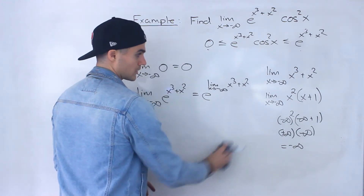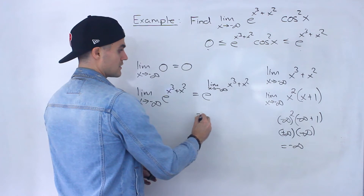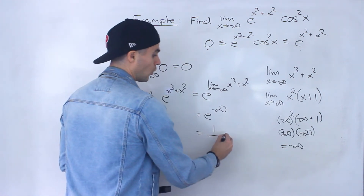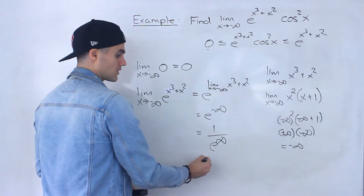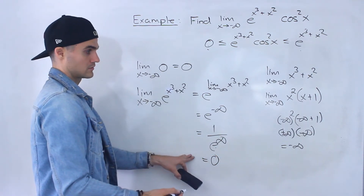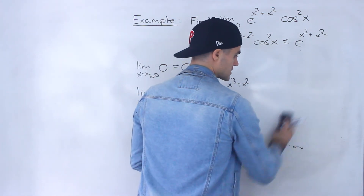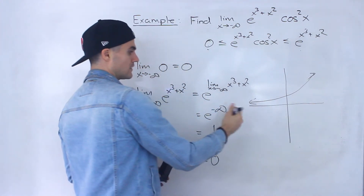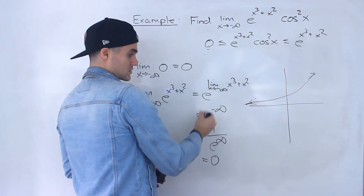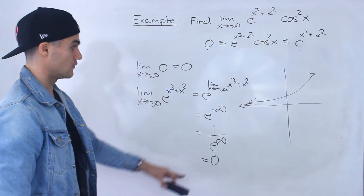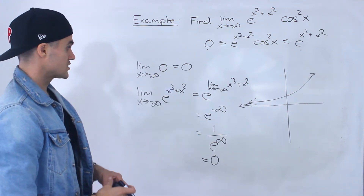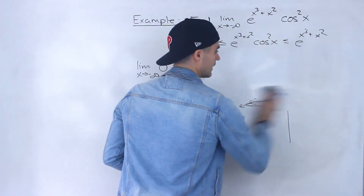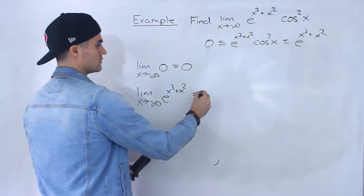So, showing it both algebraically and graphically, the exponent goes to negative infinity, meaning we have e to the negative infinity. That's the same as 1 over e to the infinity — 1 over a very large number — so this limit is approaching 0. You can also see that from the graph of e^x: as x approaches negative infinity, the y values approach 0.